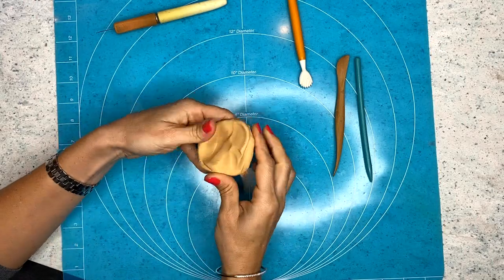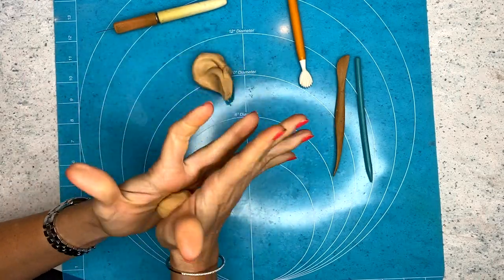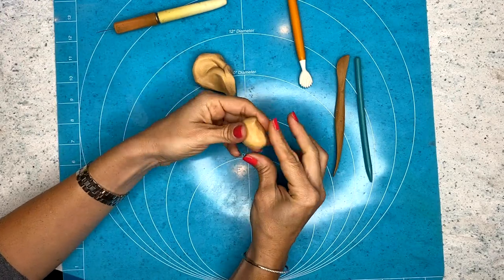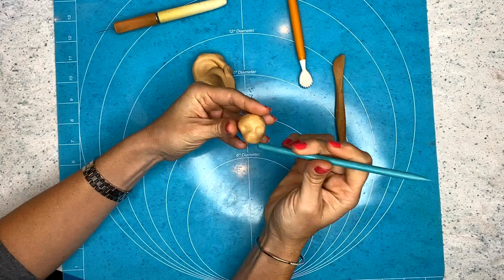All right, so the first thing I did is I used my modeling chocolate and I shaped the head of the puppy, gave it a little snout, and with my tool I gave it a little indentation for the eyes as well. I set it aside so that it sets.